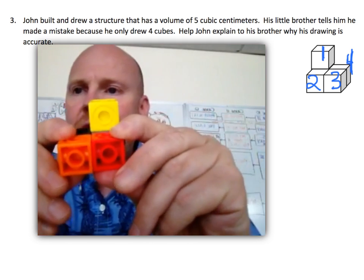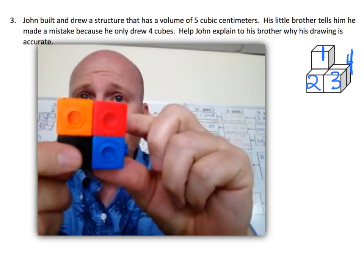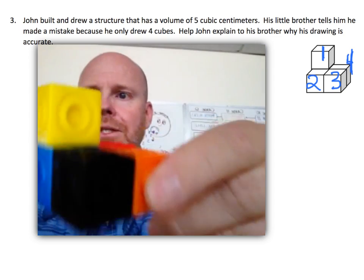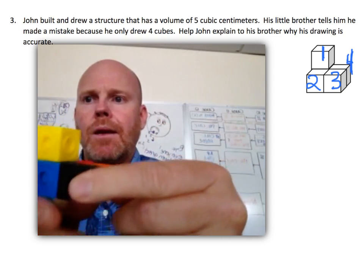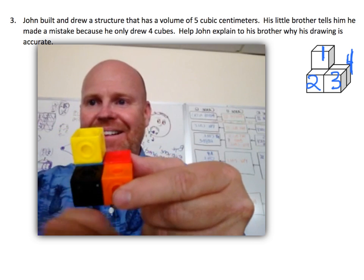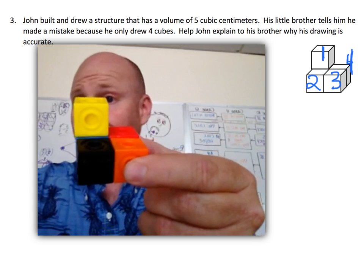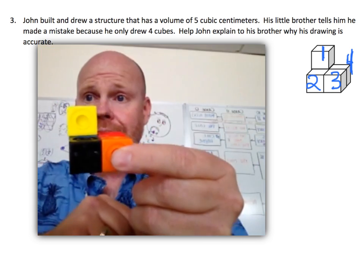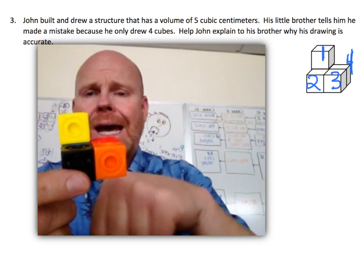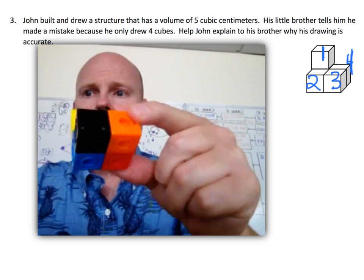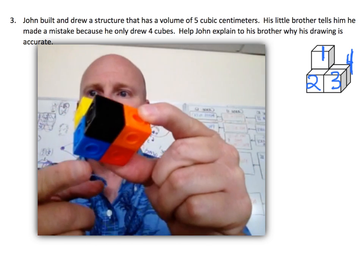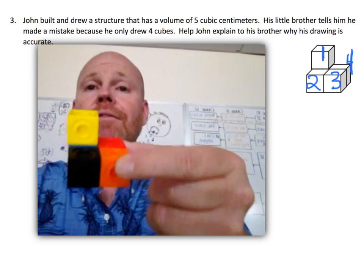But if we actually build it, we can see—well, there are indeed four cubes. Let me arrange it so it looks like the picture here. There we go. There's the figure and it looks just like what the brother is seeing. The little brother is seeing that there's one on top, then the black one, the orange one, and the red one in the back. But the thing is it's three-dimensional. So this yellow one on top is actually sitting on a blue cube right here, making five cubes.